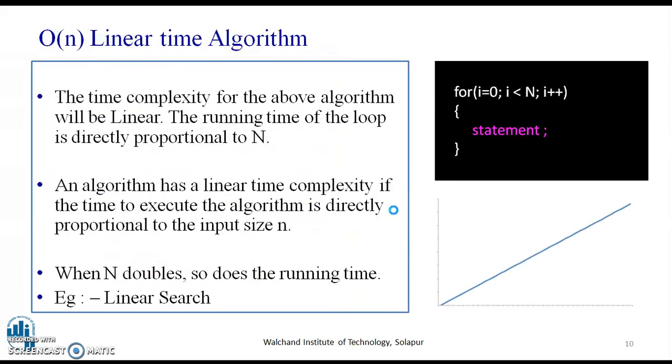Now, O(n), linear algorithm. Linear algorithm is one where runtime grows directly in proportion to n. Consider the for loop given here. For i is equal to 0, i less than n, i plus plus statement, the time complexity of the above algorithm will be linear. Means, the running time is directly proportional to n.